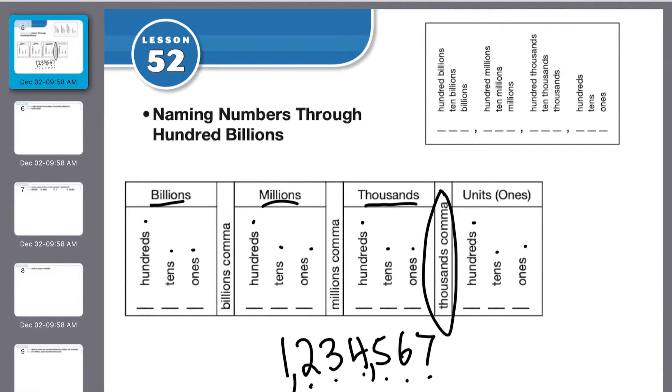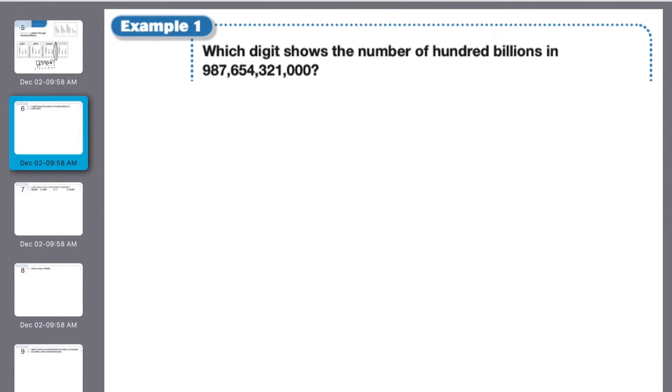Which digit shows the number of hundred billions in this number? So ones, tens, hundreds, and I'm looking for billions. So this would be thousands, ten thousands, hundred thousands, million, ten, hundred million.